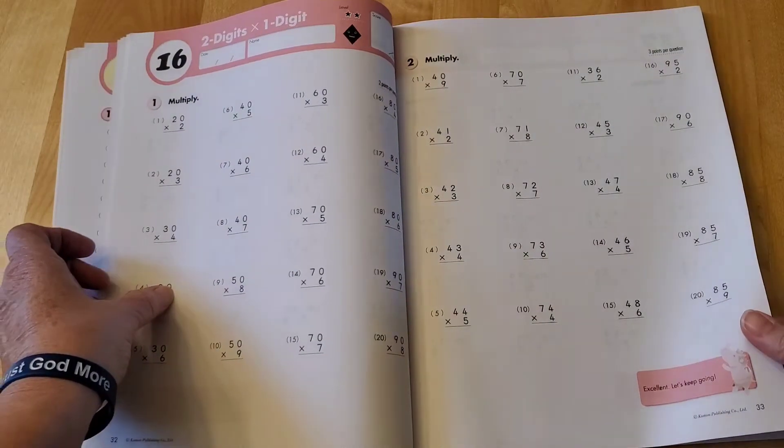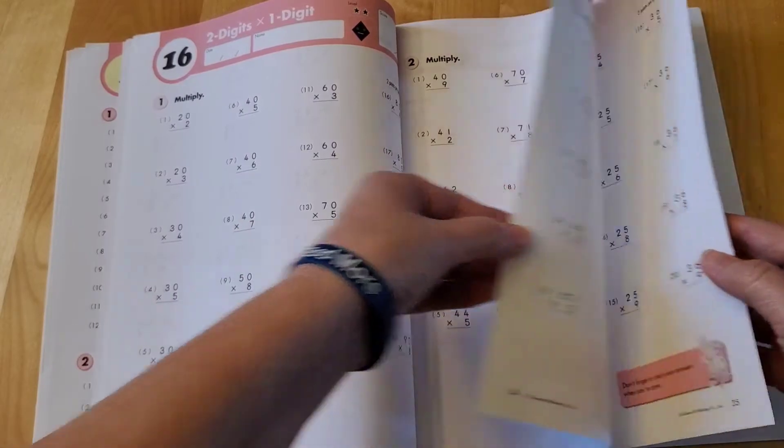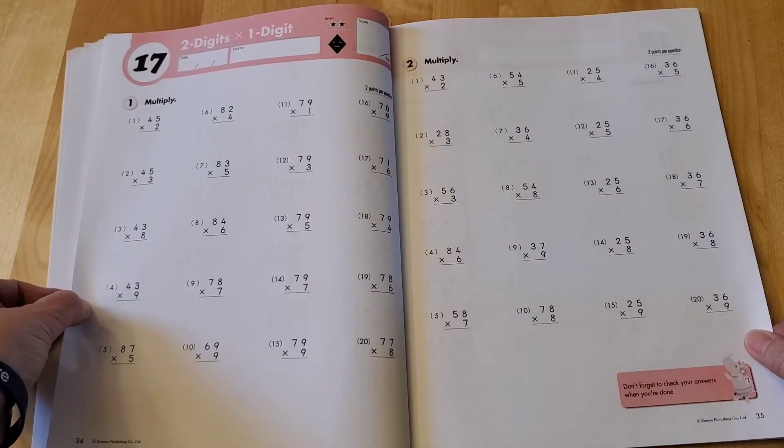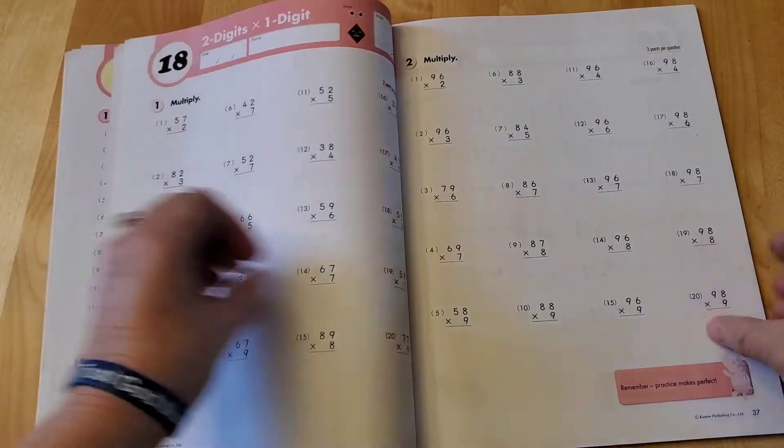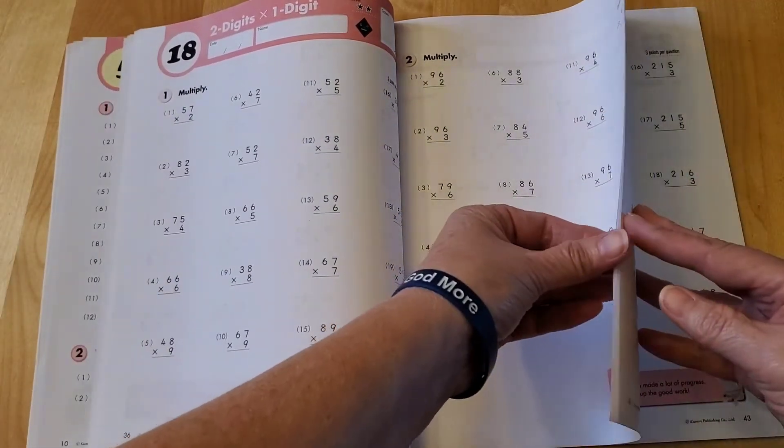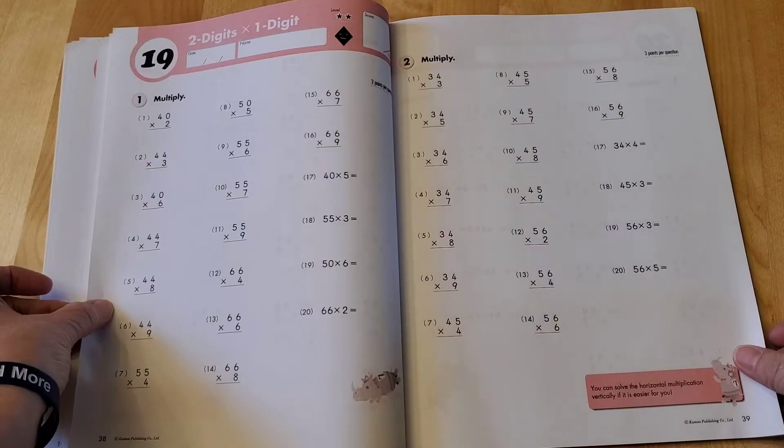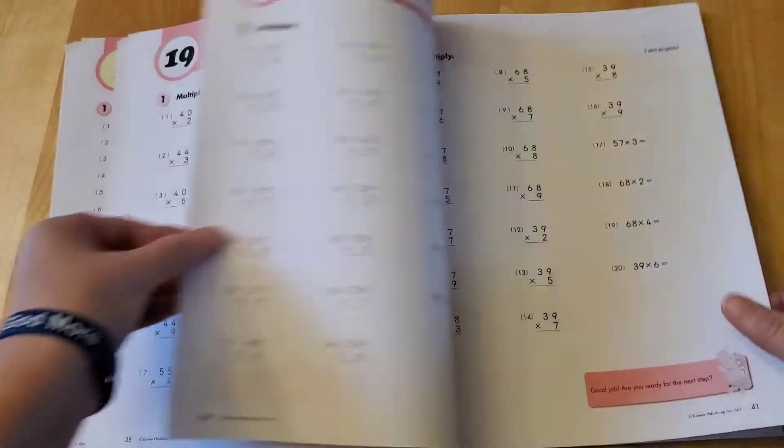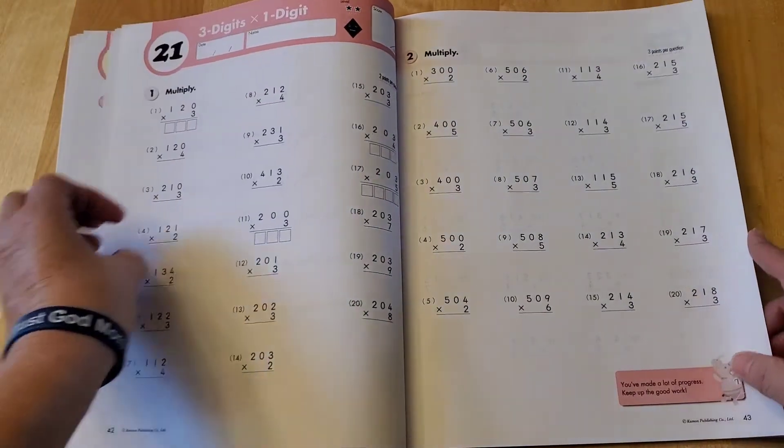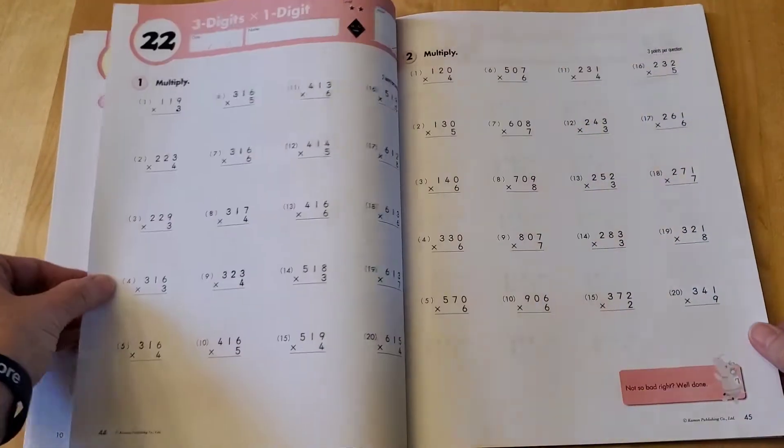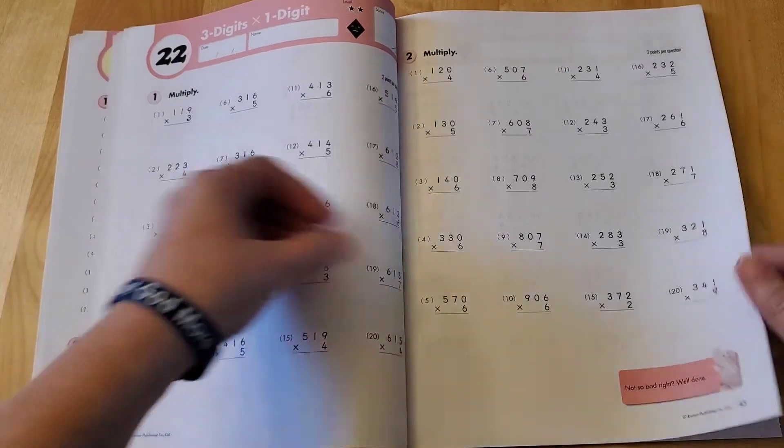Or times one digit, I should say. So it's a mix. So that moves into the three digits times one digit.